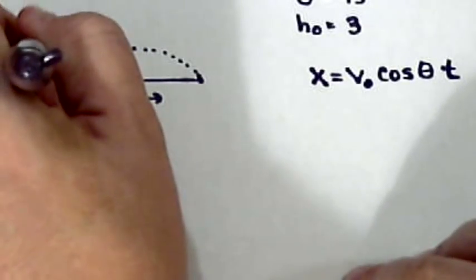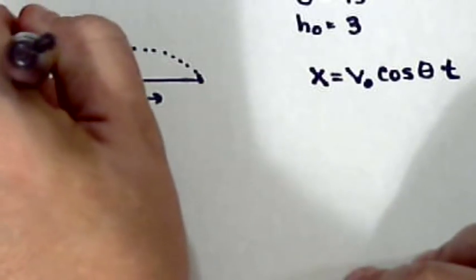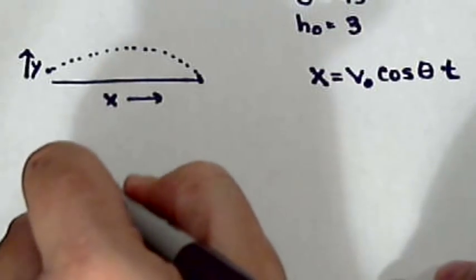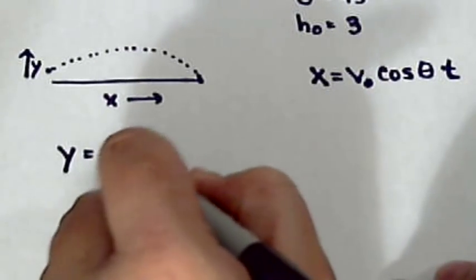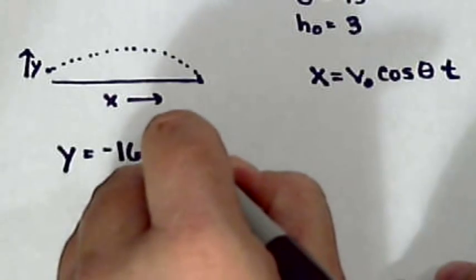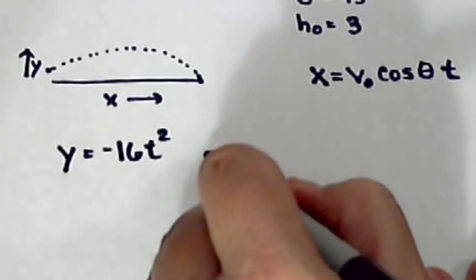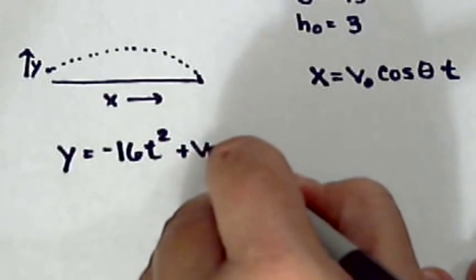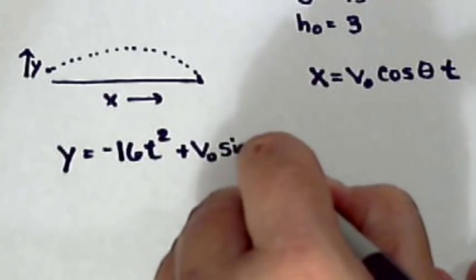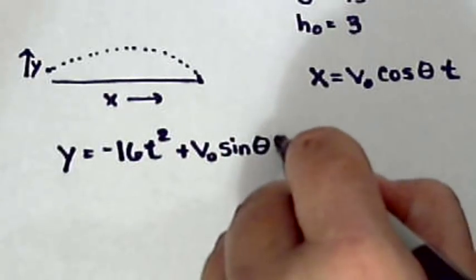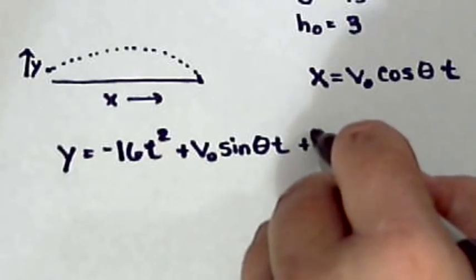The Y component is how high it is in the air. And so the formula for that is negative 16 T squared plus V0 sine theta T plus H0.